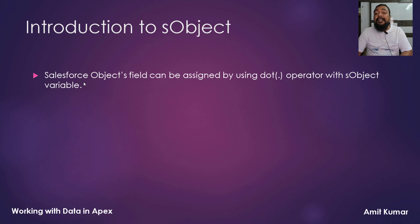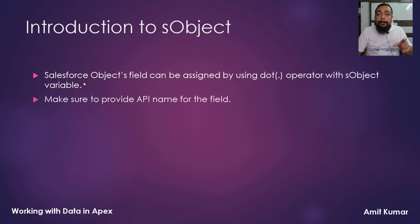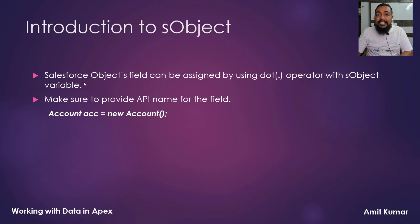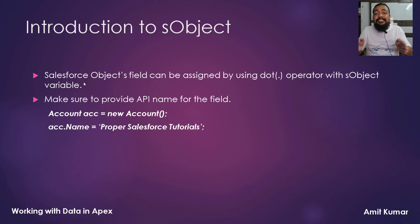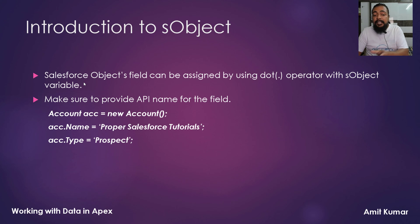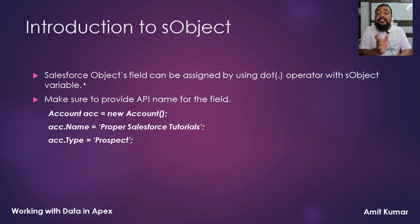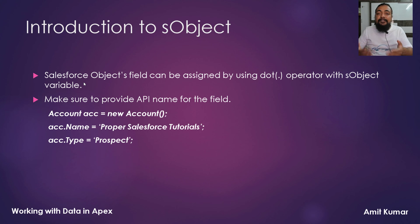Salesforce object fields can be assigned by using the dot operator with the S-Object variable. So if my variable name is ACC, I can use the dot operator as ACC.FieldName. Make sure that the field name should be the API name of the field and not the label. For example, I can access the name field of the Account as ACC.Name and assign any value to it. I can also assign a value to the type field using ACC.Type. Whatever value you provide here will remain within the variable itself and will not be part of Salesforce until we perform a DML operation. We will discuss DML operations later.